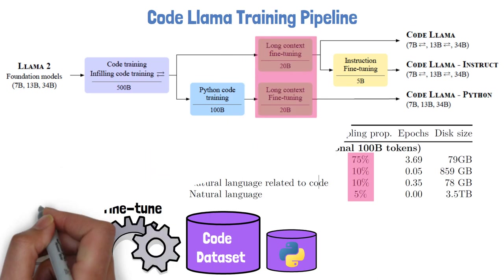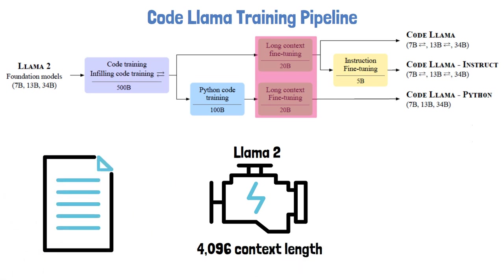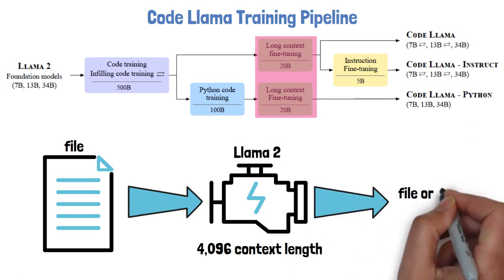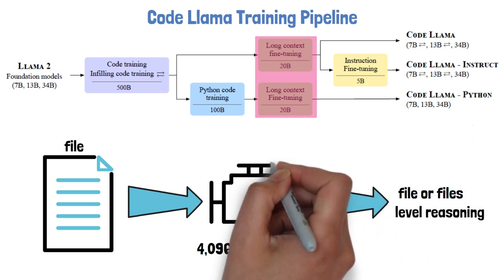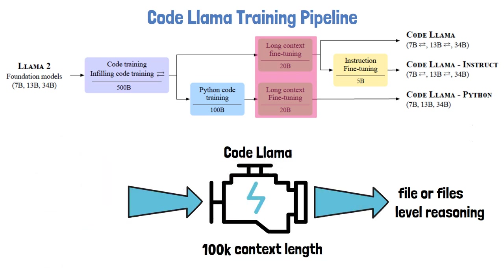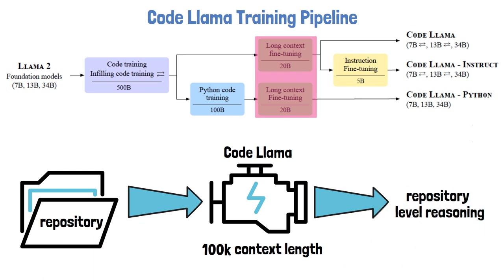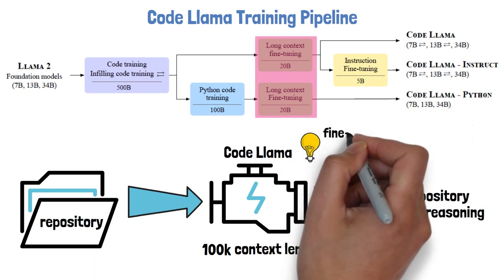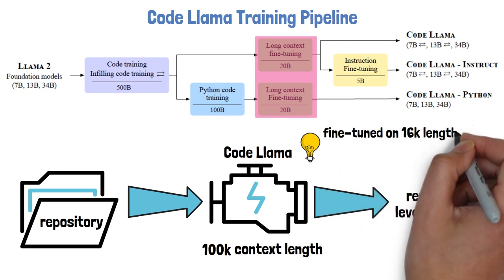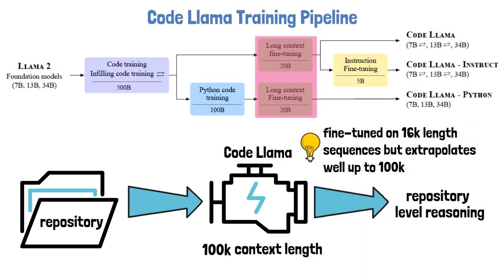The next step is long-context fine-tuning. Llama 2 supports a context length of 4,096 tokens, and with such context length we could provide Llama 2 with a file or few files and get file-level reasoning. But with CodeLama and this long context fine-tuning, the context length is increased to 100k. So now we can feed the model with a full code repository and get repository-level reasoning. In this step the model is actually fine-tuned with 16k length sequences, not 100k, but it extrapolates well for sequences up to 100k tokens.